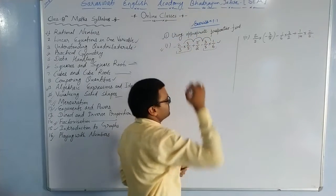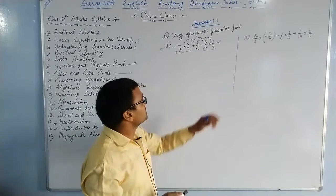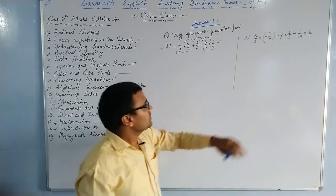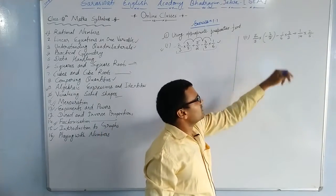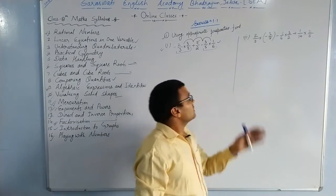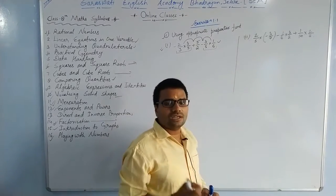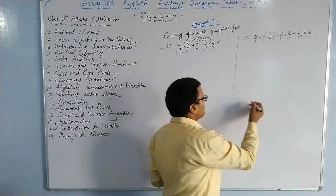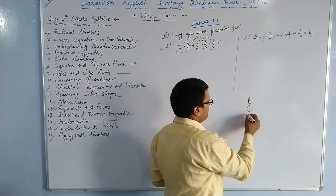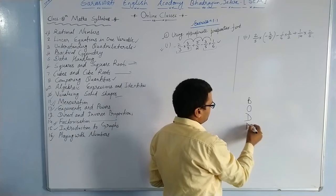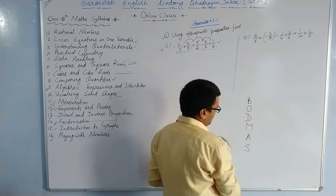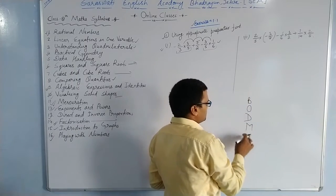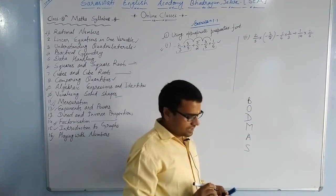Here we are seeing multiple operations in between these fractions — like addition, subtraction, and multiplication. Brackets are also involved. So in this type of problem, which is called simplification, we have to apply the rule called BODMAS.